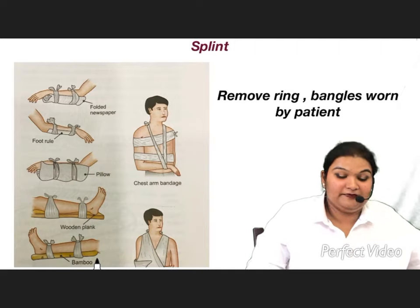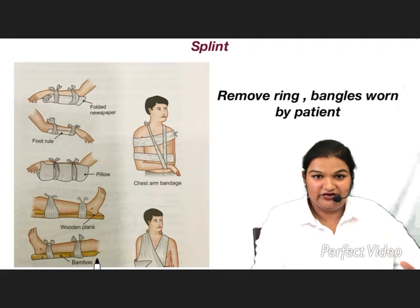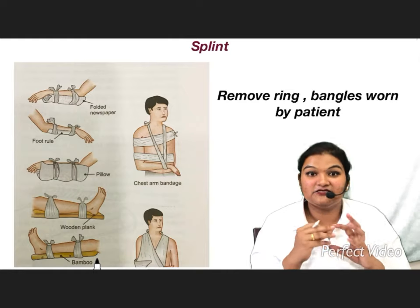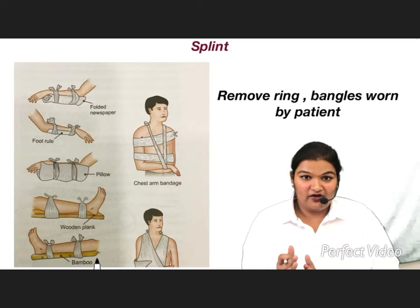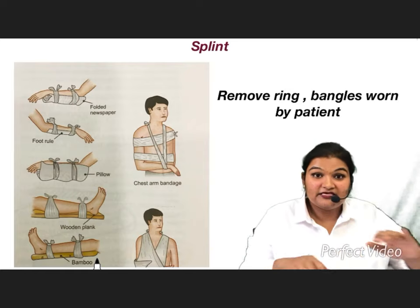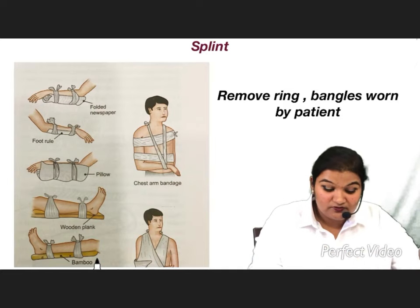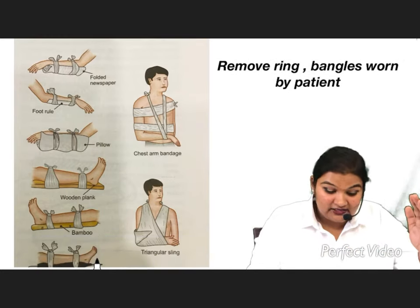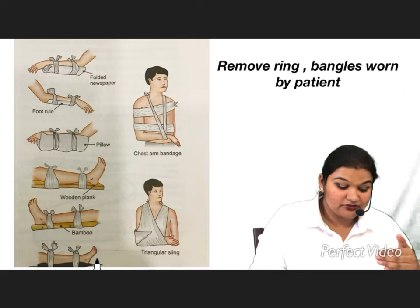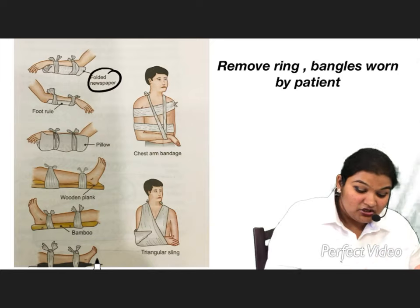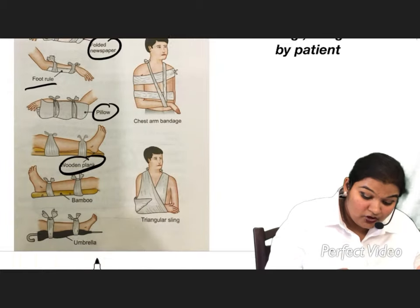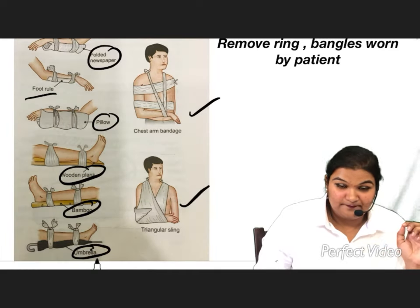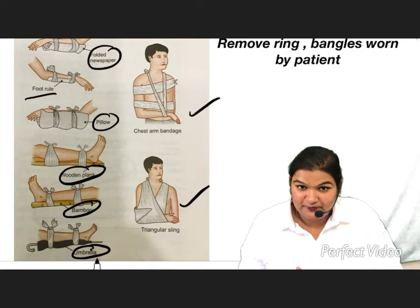Splinting means supporting the affected part. Before splinting, remove all bangles, rings, bracelets, anklets, and watches worn by the patient — because if the affected part continues to swell, these will stop blood supply to the distal part. After removing them, apply the splint. You can use a folded newspaper, foot ruler, pillow, wooden plank, bamboo, umbrella, or make slings out of clothes.